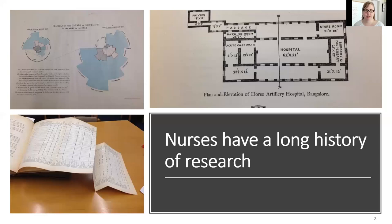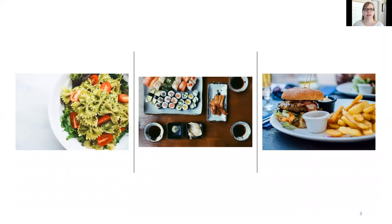Moving on to what is the research process and what does research look like for nurses? It can be overwhelming when reading research studies — there are studies on everything, from large randomized control trials of neonatal intensive care interventions to studies on how people with dementia react to different textures of quilts they touch, and everything in between. When approaching research, I encourage you to think of it a bit like food — and I love a good food analogy.